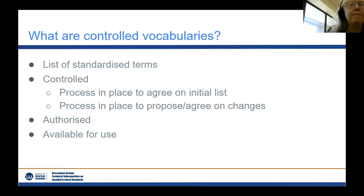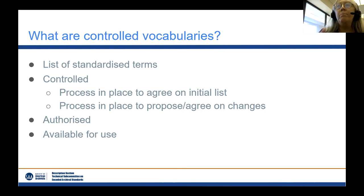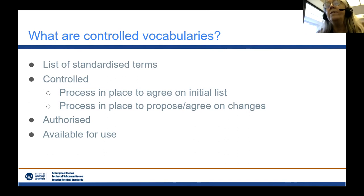So first off, what are controlled vocabularies? A controlled vocabulary is a vocabulary that's controlled — it's a list of standardized terms. It's controlled in the sense that there was a process in place to agree on the initial set of terms, and there is a process in place to propose and agree on any changes. Controlled vocabularies are what's called authorized, meaning not just anyone can contribute to them or change them, and they're available for public use.